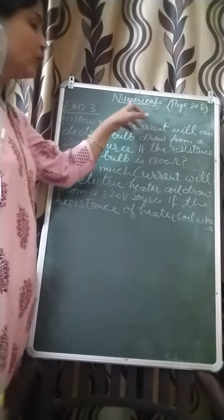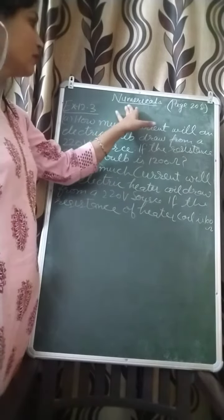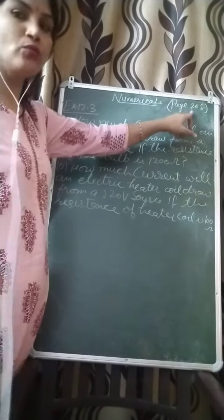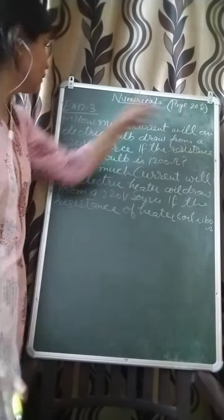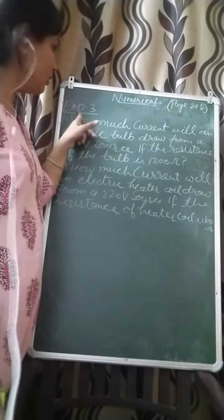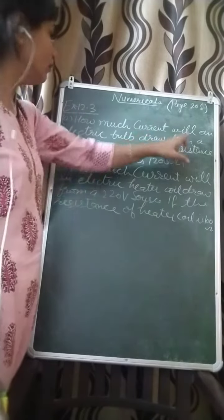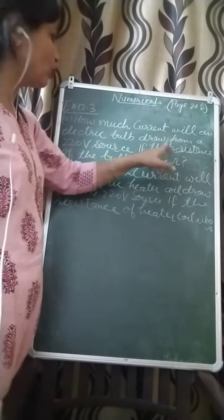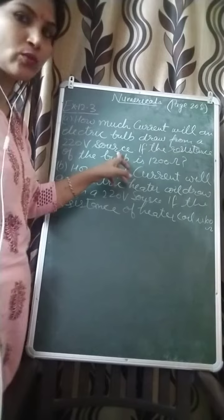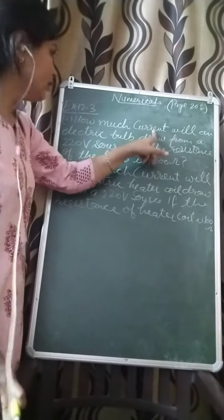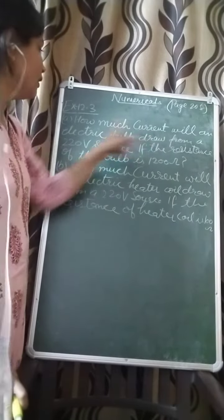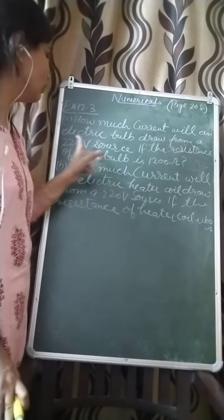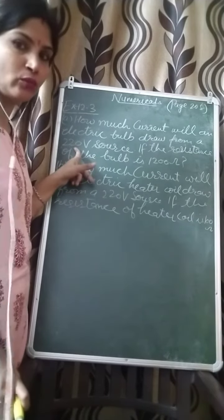Class friend, today we will start the numericals given on page number 208 of your NCERT book. Example 12.3: How much current will an electric bulb draw from a 220 volt source? You have to find out how much current flows from an electric bulb if it is connected to 220 volt.